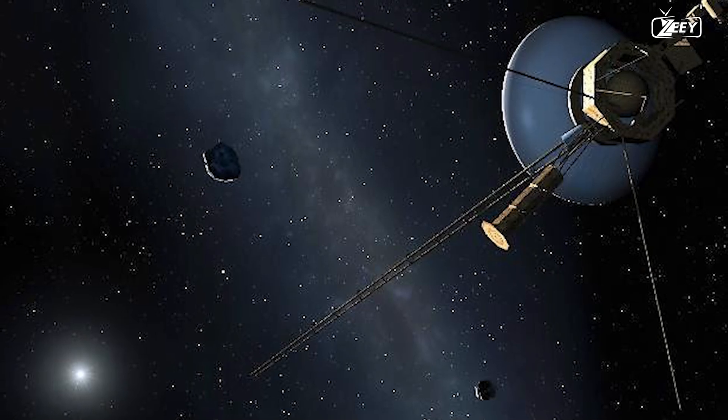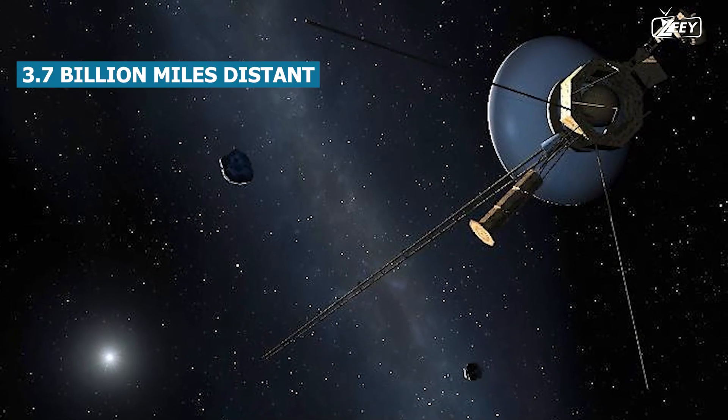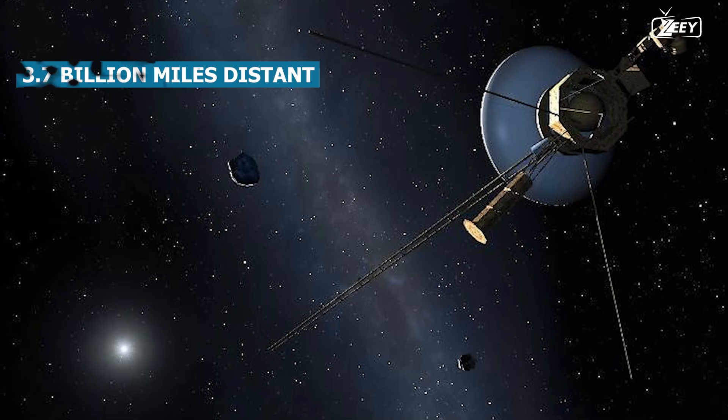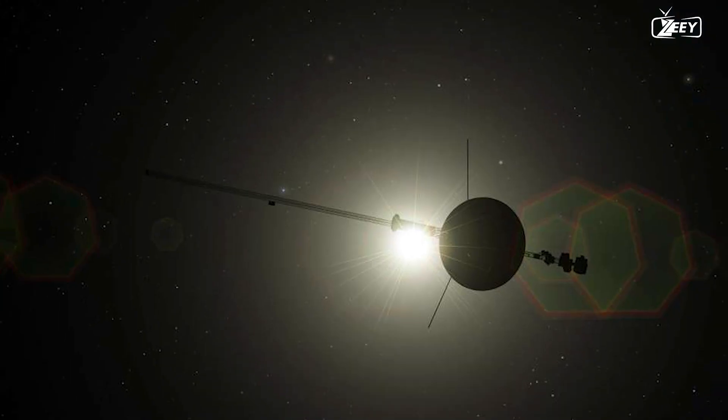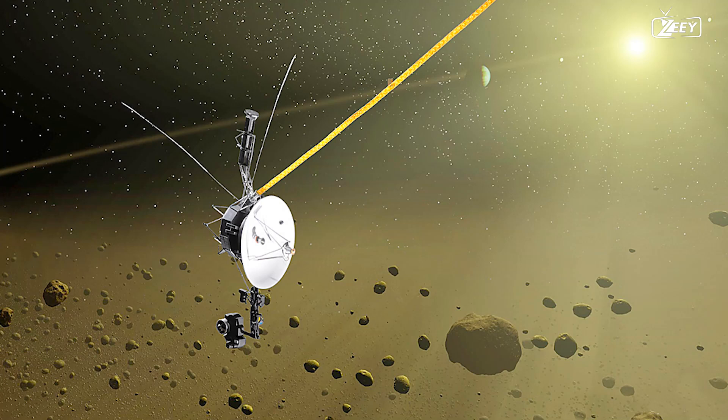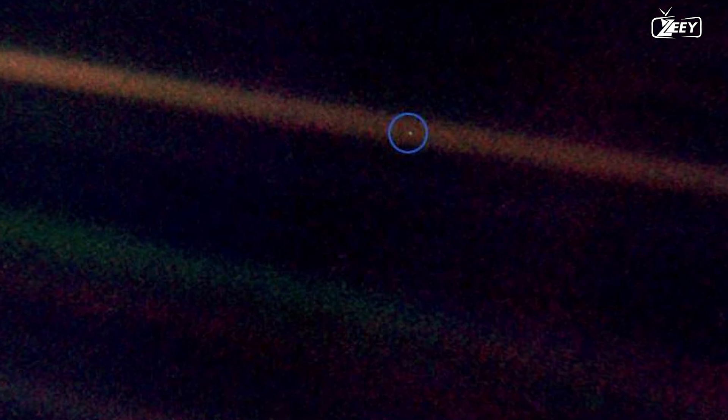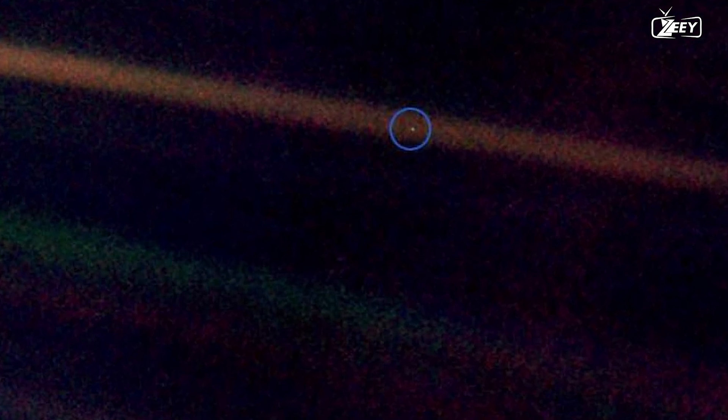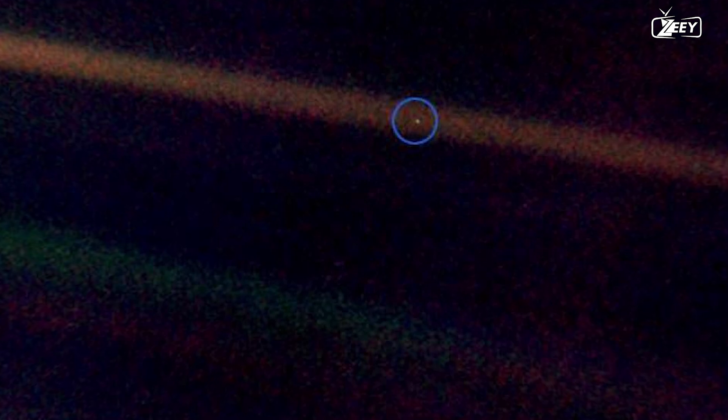This was accomplished when the spacecraft was approximately 3.7 billion miles distant, which must have been a remarkable vantage point. In addition to Venus, Jupiter, Neptune, and the Sun, the spacecraft also captured numerous images of other celestial bodies in our solar system. As you examine these images and recognize the pale blue dot as our home, you realize how insignificant we are as we float along this minuscule pebble in the vast universe.